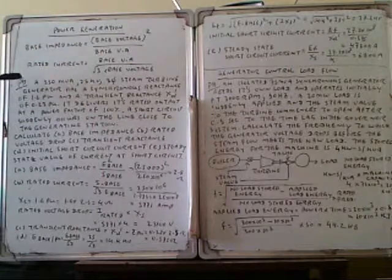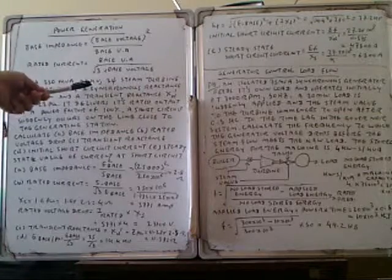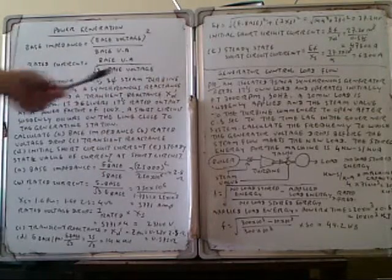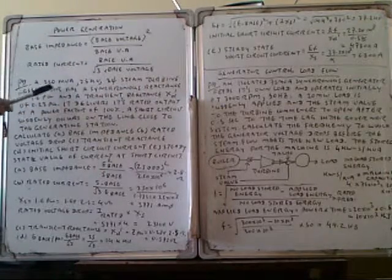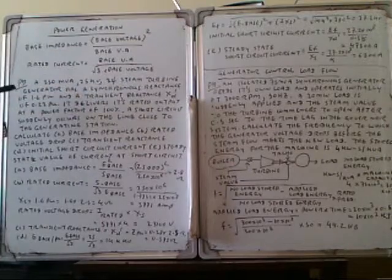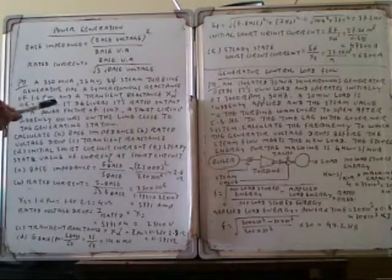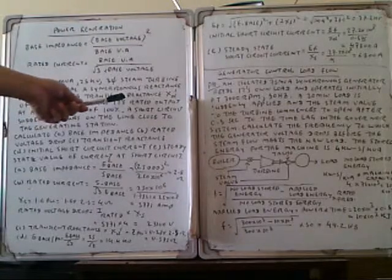The problem involves a 250 MVA, 25 kV, 3-phase steam turbine generator. It has a synchronous reactance of 1.16 per unit and a transient reactance of 0.23 per unit.